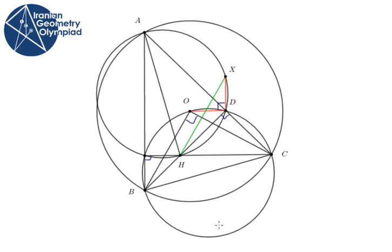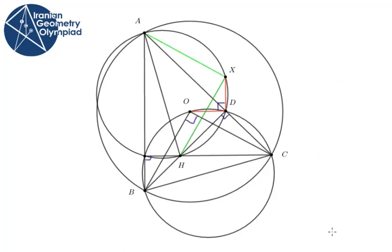Now look at angle HXA. It's half of the arc HA, which is 180 degrees. So angle AXH is 90 degrees.